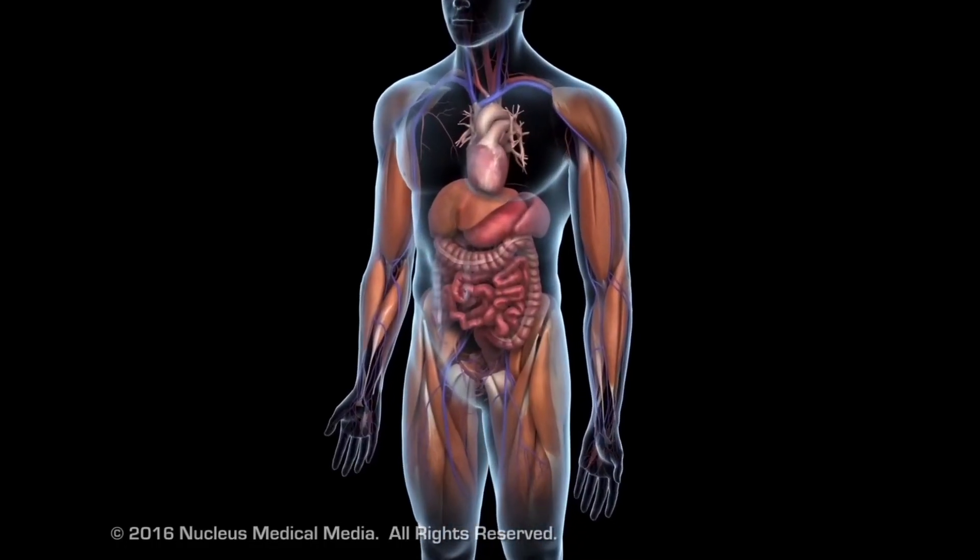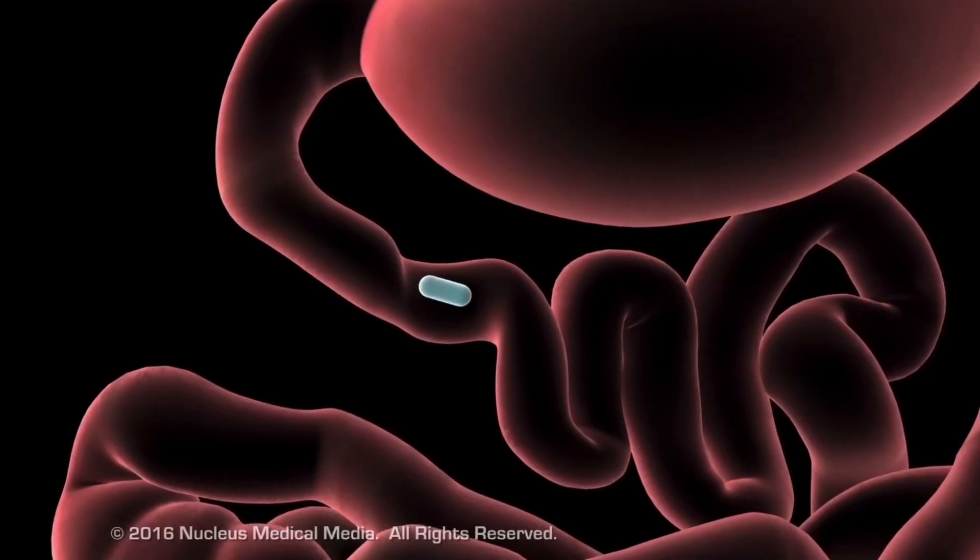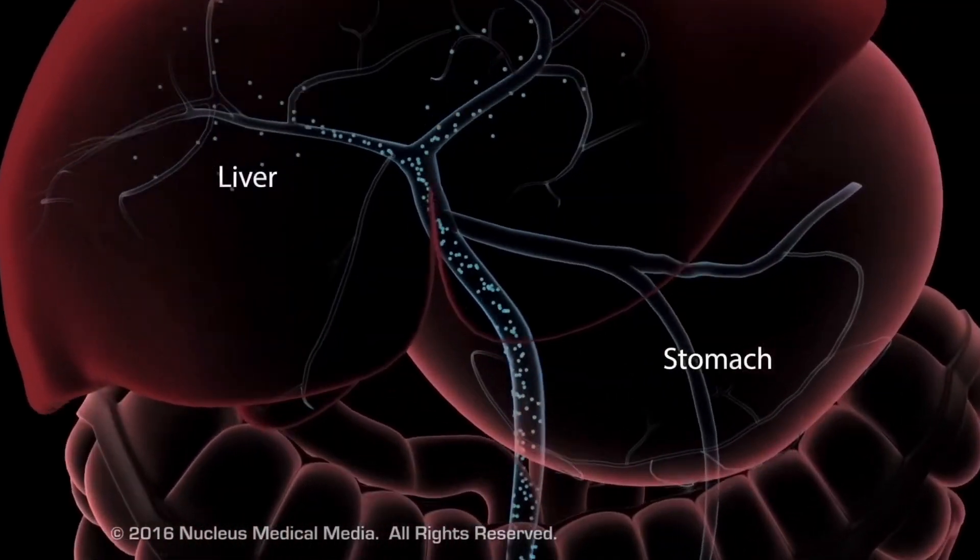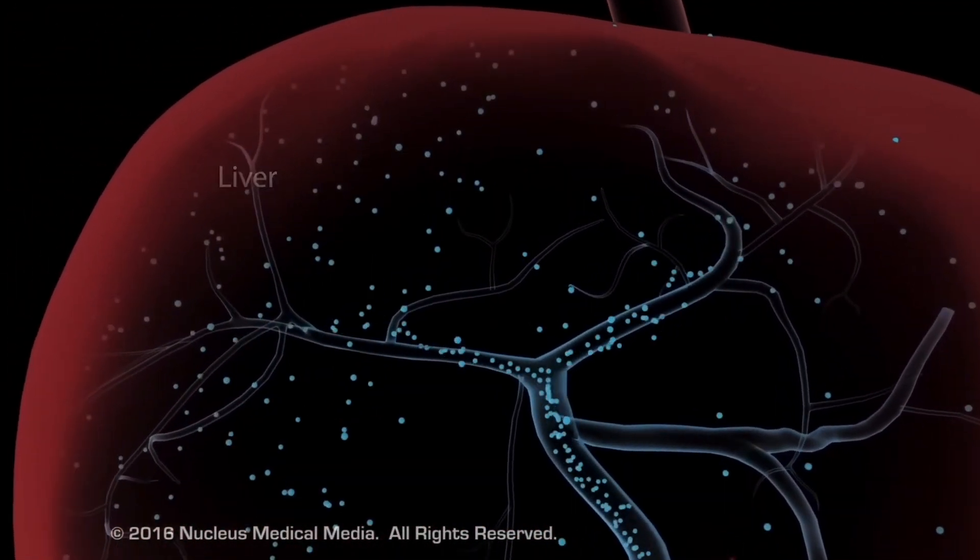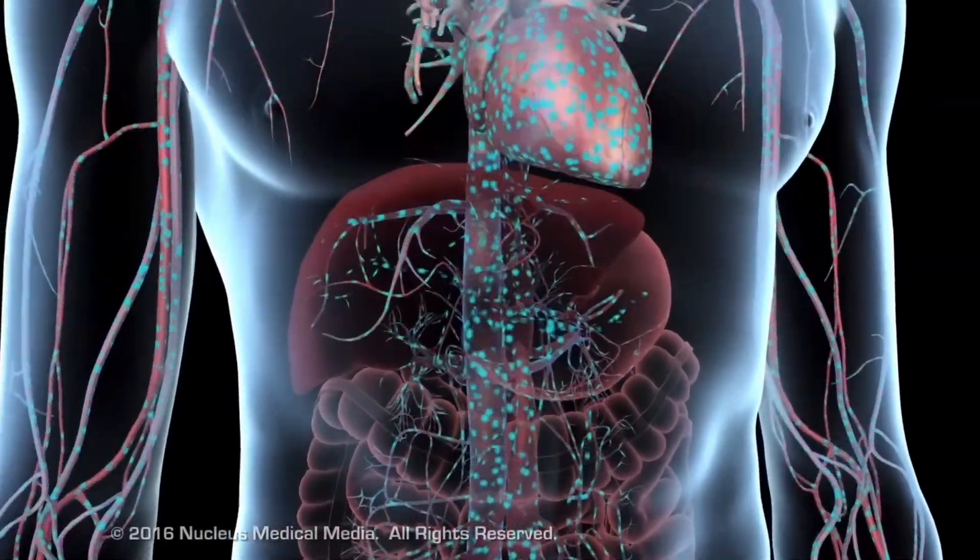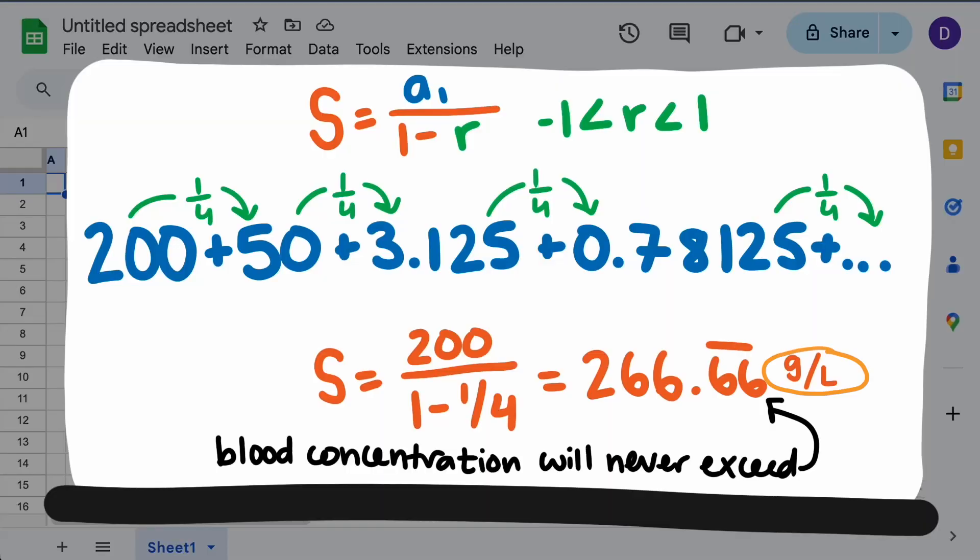Although using half-life is often a good model to accurately model what happens with the drug, our values are off because we are assuming all the medicine stays in the blood. In reality, the medicine travels to other organs, so when doctors actually test the blood concentration, it is much less than 200 grams per liter. In practice, Tylenol concentrations are usually reported as micrograms per milliliter, which is what we use in our next example.